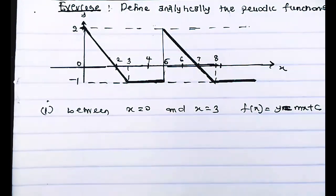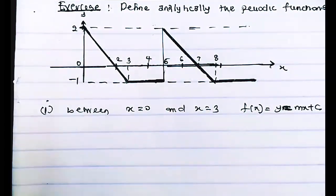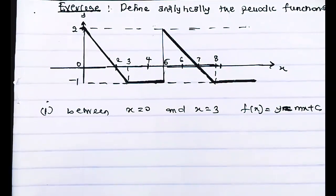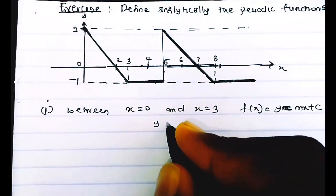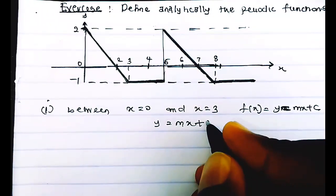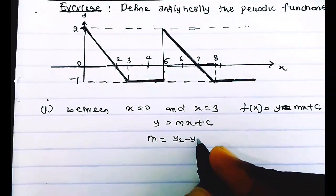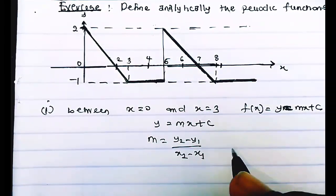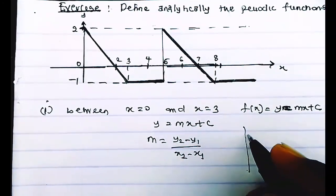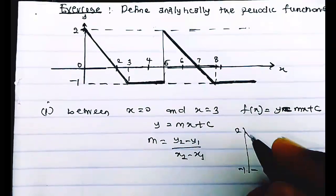Since there are no constant values of y between 0 and 3 — the values are changing — we need to calculate the equation of the straight line we have in front of us. So we use y = mx + c, and the first thing we need to find is the slope m, which equals (y₂ − y₁) / (x₂ − x₁). Let me bring out the graph we're looking at.